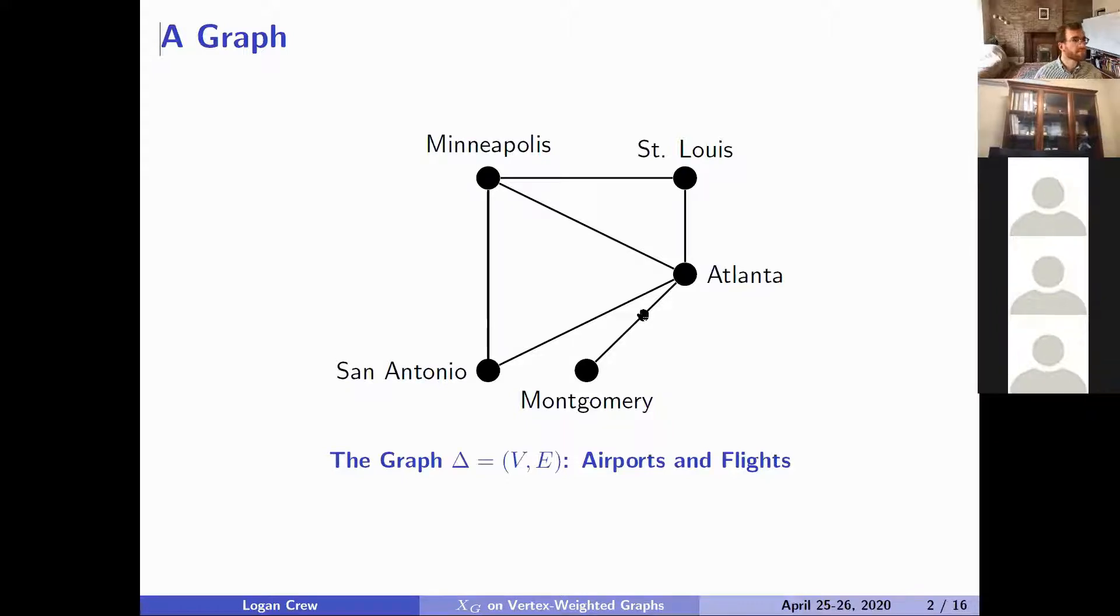In this particular example, I am using a graph of major airports and flight routes by a particular airline. This graph is gonna be called Delta, and I will be referencing it.